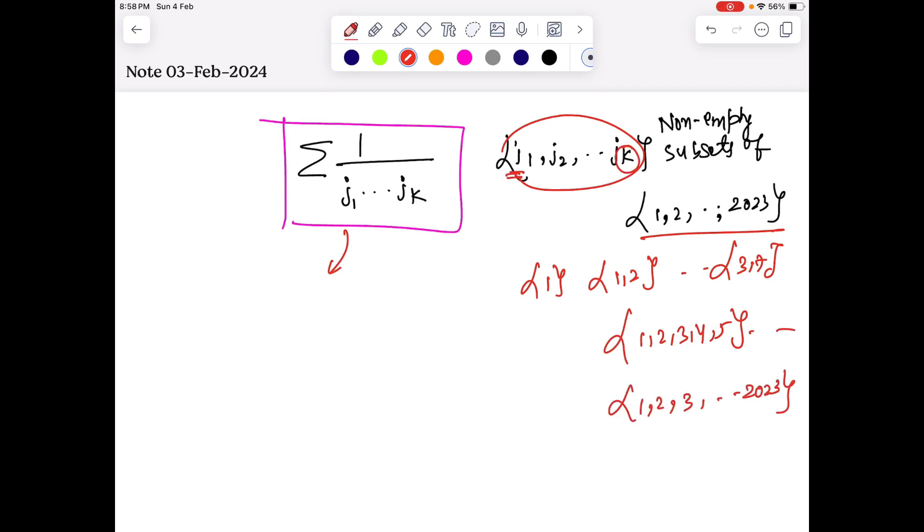Because k can change, right? K can be 1, so we'll have only one element. If k is 2, we'll have 2 elements. K can be 1, so we'll have one element. K is 5, we'll have exactly 5 elements. If k is 2023, all the elements. Empty set has to be discarded, okay? So we can't have that.